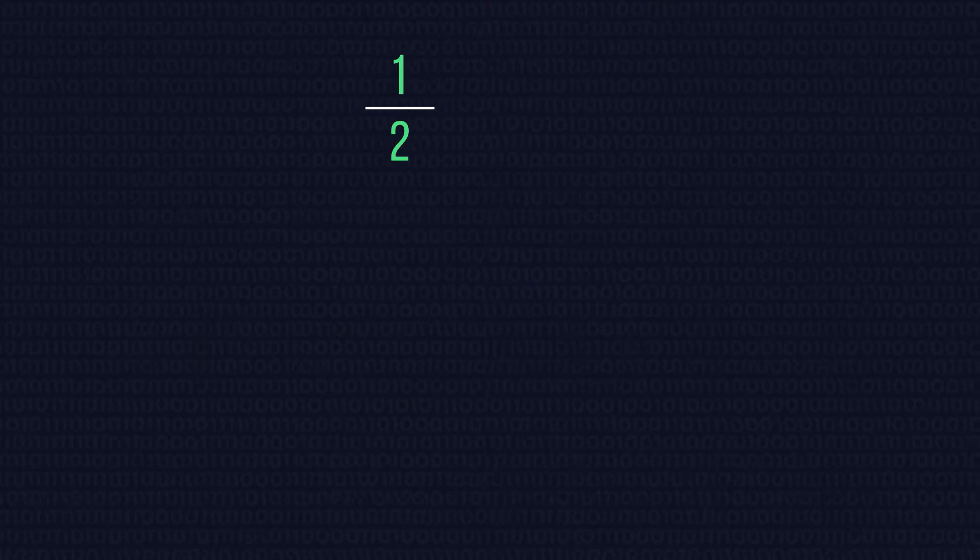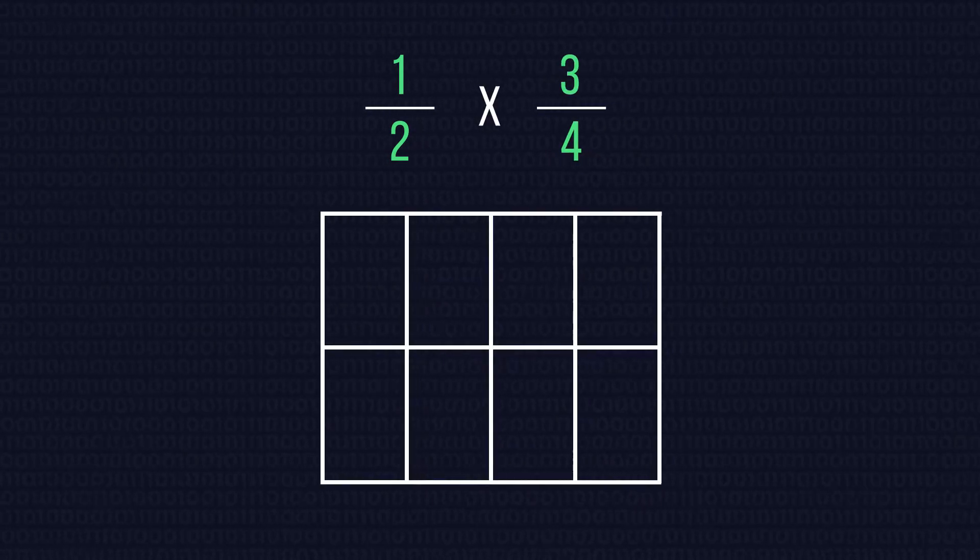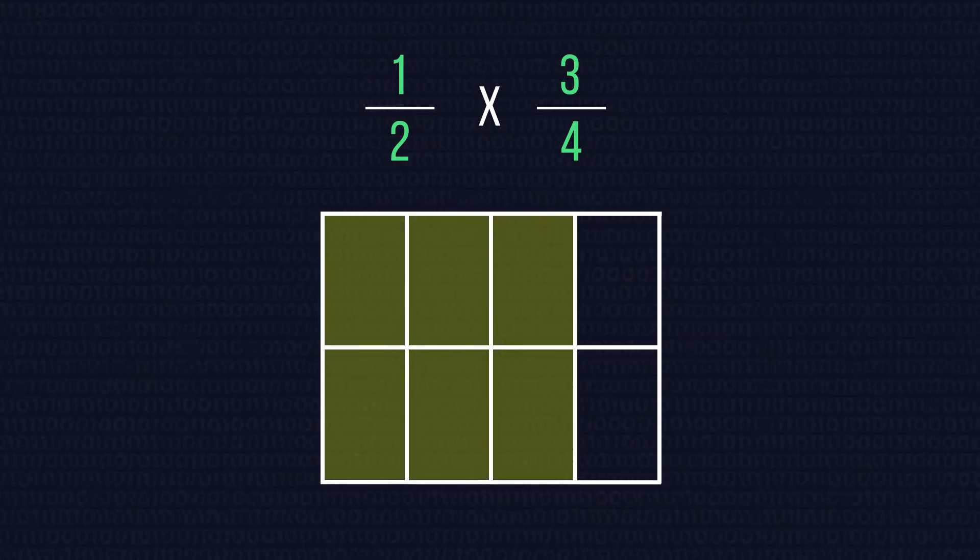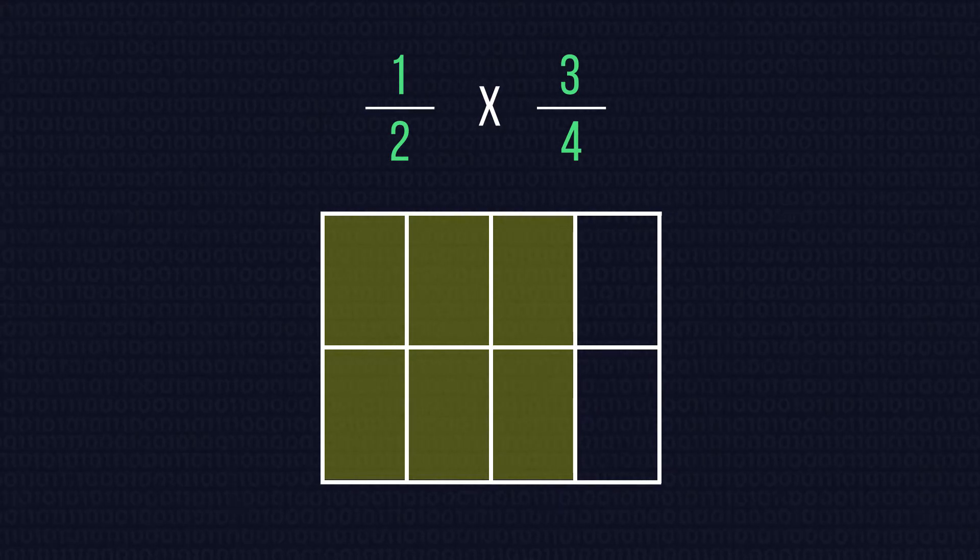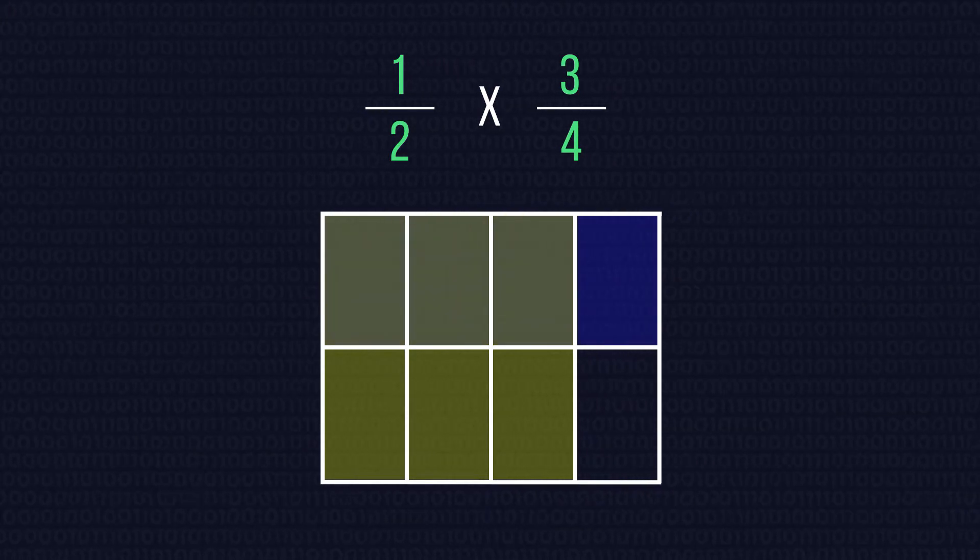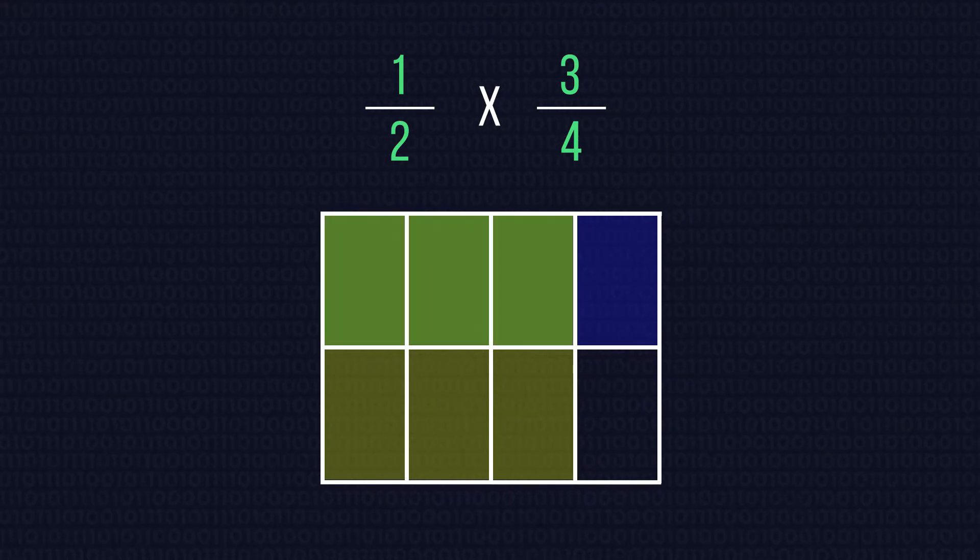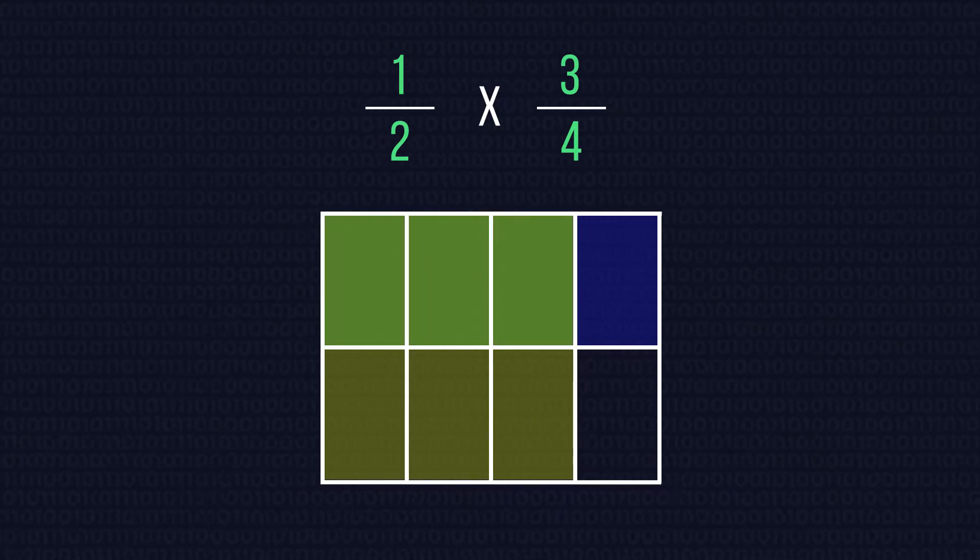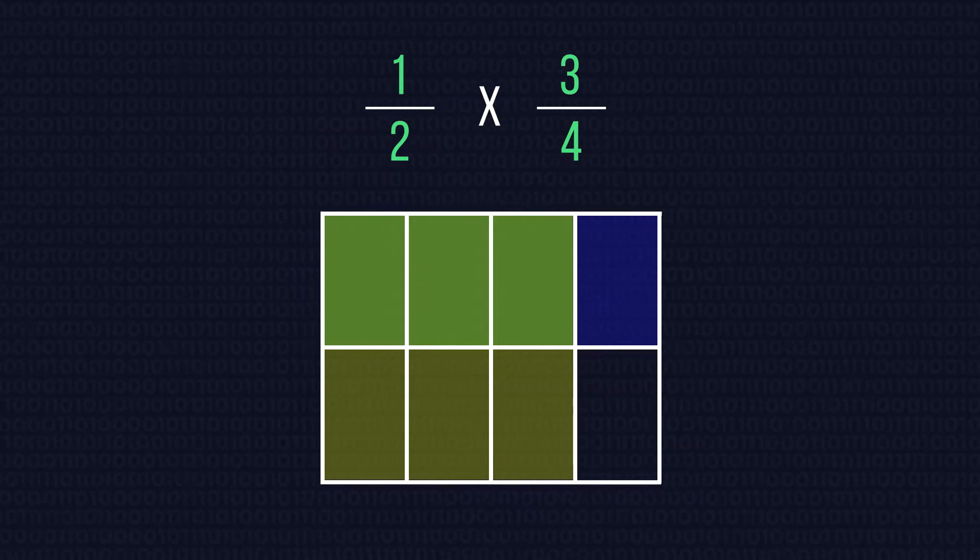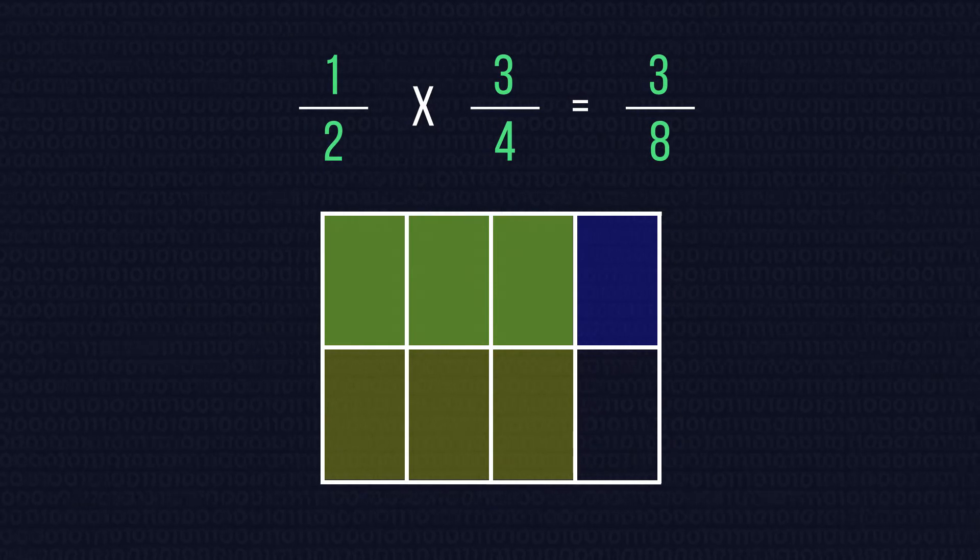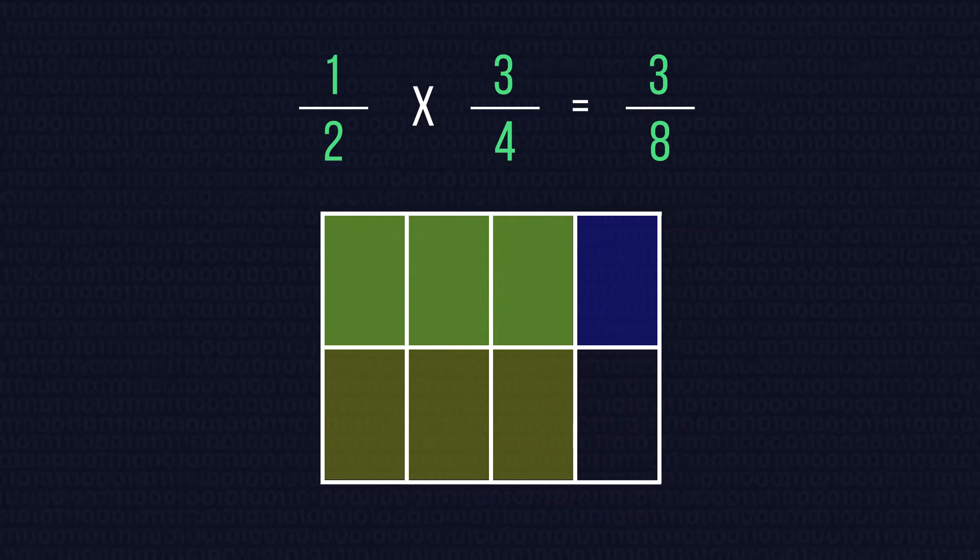Consider 1 half multiplied by 3 quarters. As we can see, if we fill 3 quarters of the grid yellow, we fill 6 boxes of the 8. When we fill one half of the same grid blue, we fill 4 boxes. Then our overlapping area is green and we have 3 of these. Therefore, the shaded area is 3 over 8. So this must be the product of 1 half and 3 quarters.